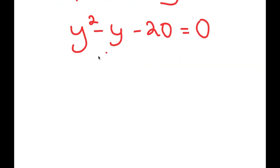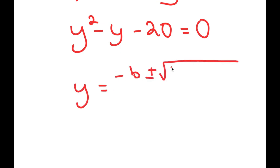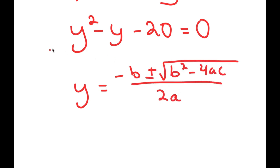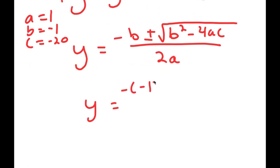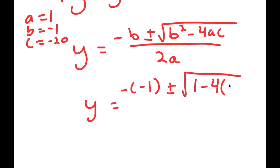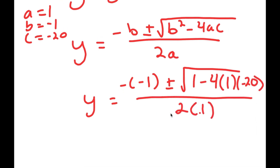To solve this, I'm going to be using the quadratic formula, which is negative b plus or minus the square root of b squared minus 4ac all over 2a. In this case, a is 1, b is negative 1, and c is negative 20. So I get y equals negative negative 1 plus or minus the square root of negative 1 squared, which is positive 1, minus 4 times 1 times negative 20, all over 2 times 1.